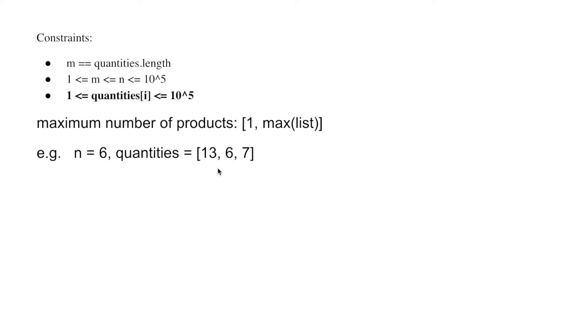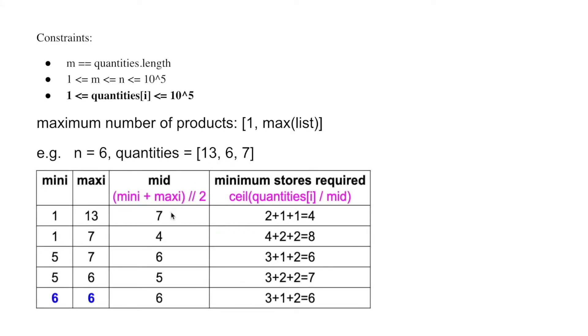Six stores and three types of products. The lower limit is 1 and the upper limit is 13. So the mid is 7. When mid is 7, the minimum stores required is at least 4. 4 is smaller than 6, means 7 might be too big. Mid minus 1 might be the correct answer, or might be too small. We don't know that yet, so we change the upper limit to mid.